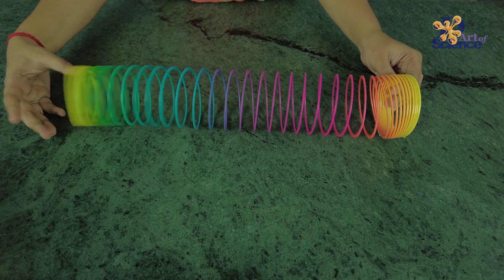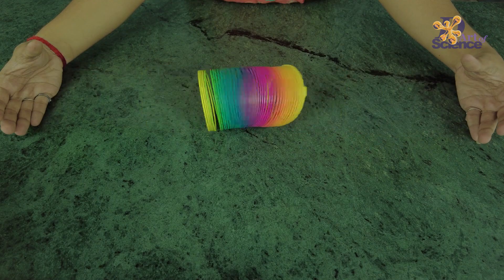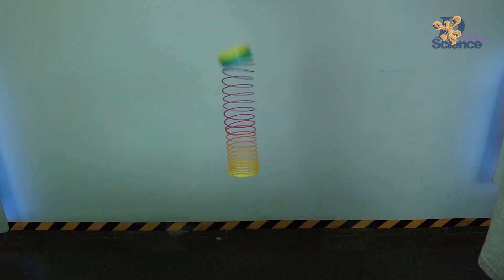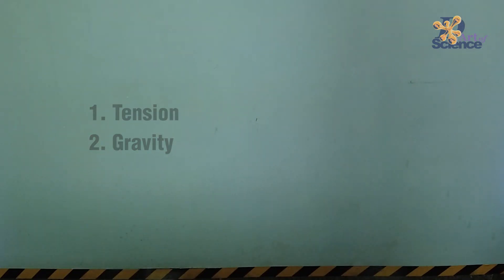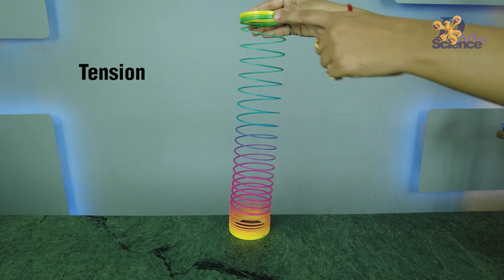But when we drop the slinky and let it free fall, two forces come into play: the tension within the slinky and gravity. Tension causes the top of the slinky to move towards the bottom. Gravity also causes the top to move downwards and therefore it starts falling down.